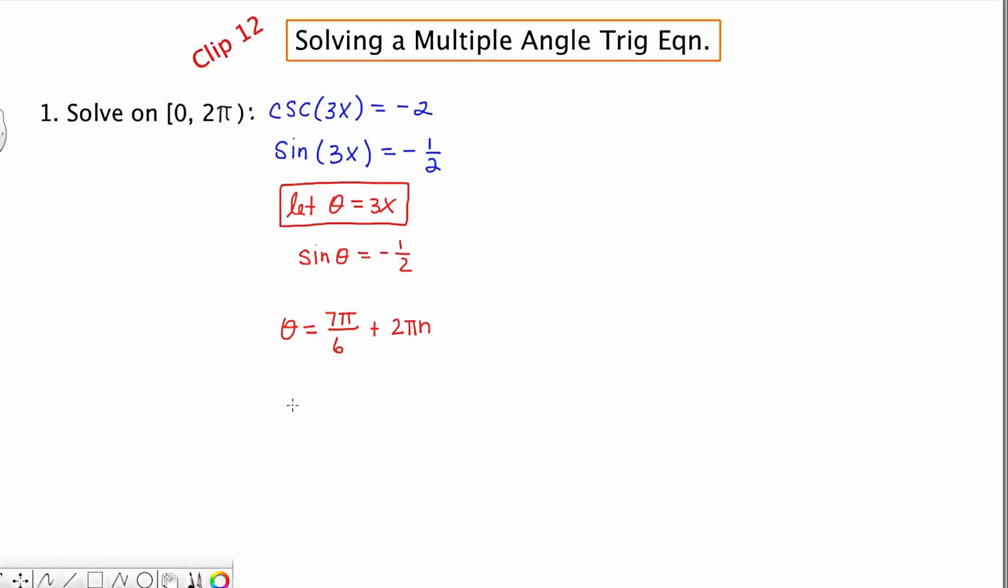And there's another place where sine is negative 1 half, and that's going to be at 11 pi over 6, quadrant 4, and all of its revolutions, or all of its coterminal equivalents.